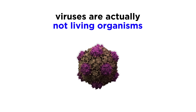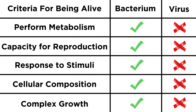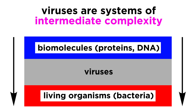Contrary to popular belief, viruses are not alive. They are much smaller and simpler than single-celled organisms like bacteria, and they do not meet most of the criteria that biologists agree are required to call something alive. Living organisms must be able to perform metabolism — making energy from food — viruses cannot. Life must be able to reproduce out of its own capacity; viruses do not. They can be considered biologically inert. So viruses exist in a kind of gray area in between simple molecules and living organisms.